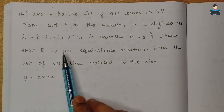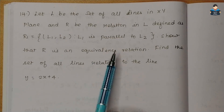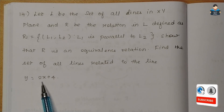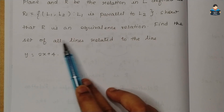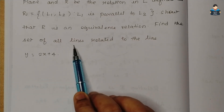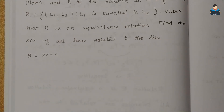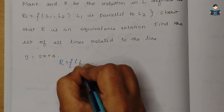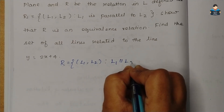We need to show that R is an equivalence relation, and also find the set of all lines related to the line y = 2x + 4. So first let's understand the relation: R = {(L1, L2) such that L1 is parallel to L2}.